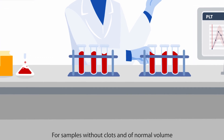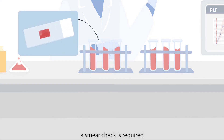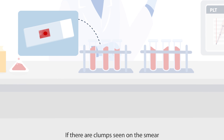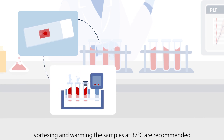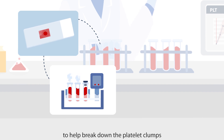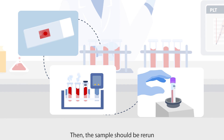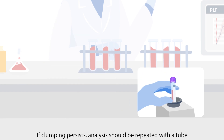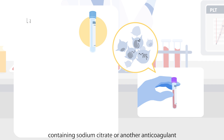For samples without clots and of normal volume, a smear check is required. If clumps are seen in the smear, vortexing and warming the samples at 37 degrees Celsius are recommended to help break down the platelet clumps. Then the sample should be rerun. If clumping persists, analysis should be repeated with a tube containing sodium citrate or another anticoagulant.